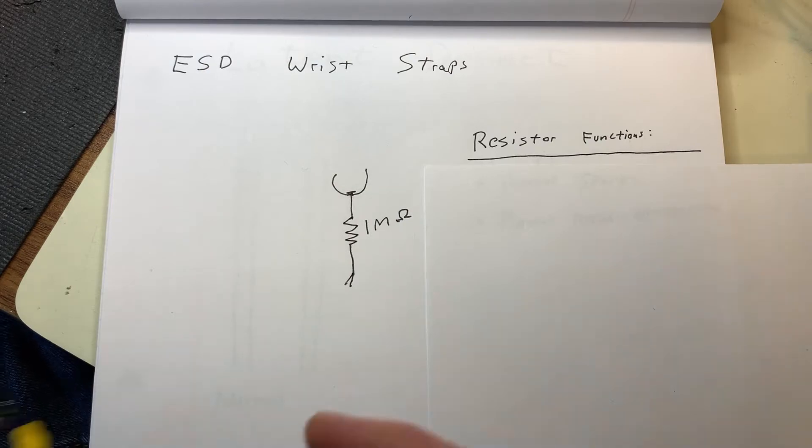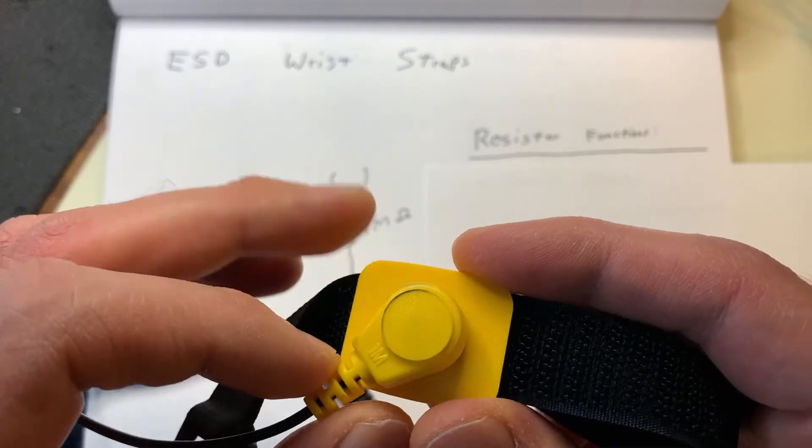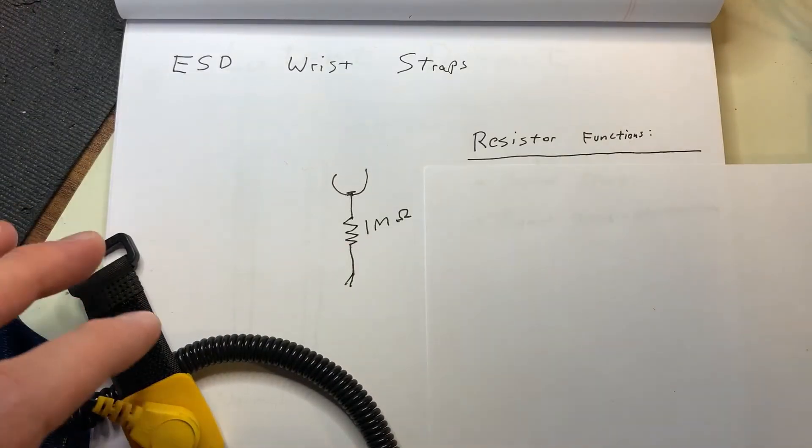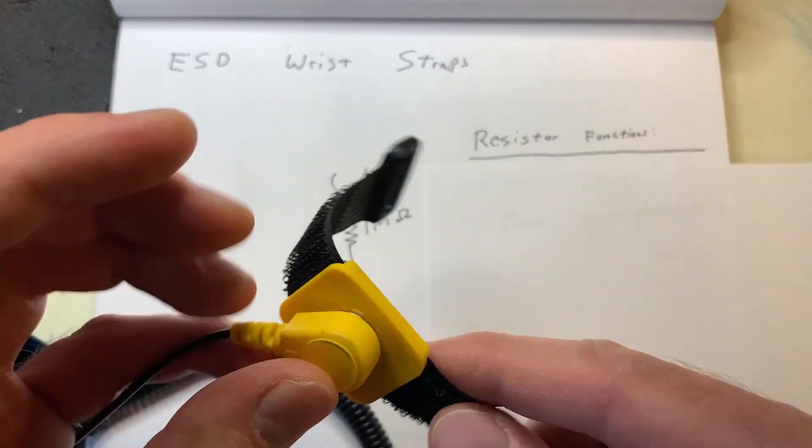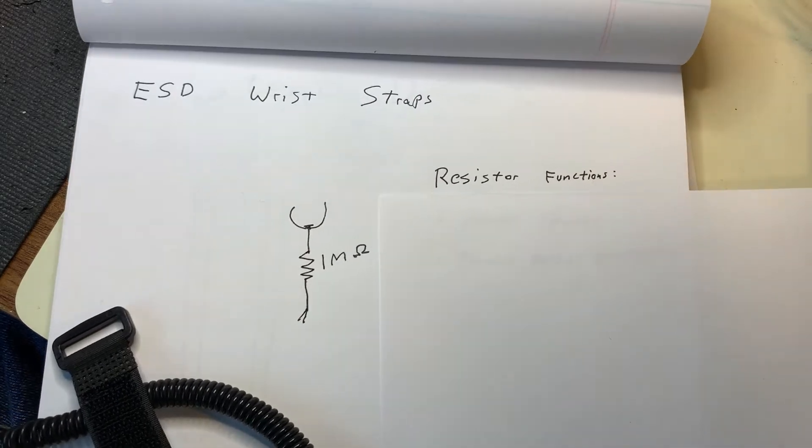So the resistor that's built into this is absolutely vital, and when you're working on electronics you need to make sure that you have a wrist strap that has a resistor in it. Using a bare piece of wire or wrist strap without a resistor can be really dangerous, and the resistor in this case provides two functions.